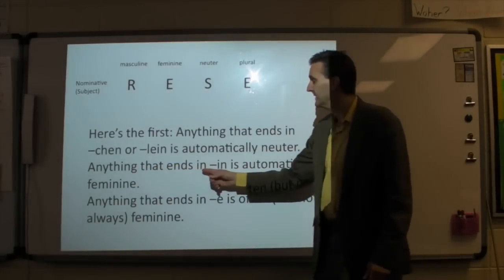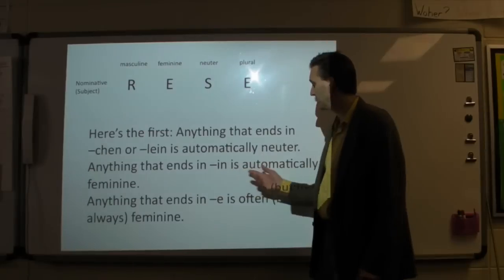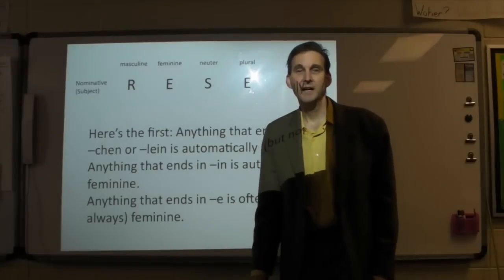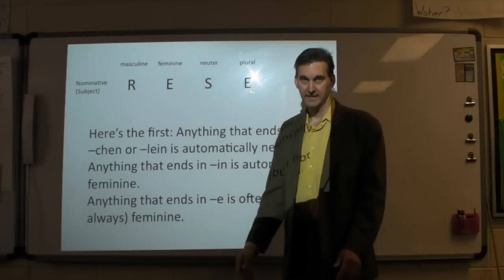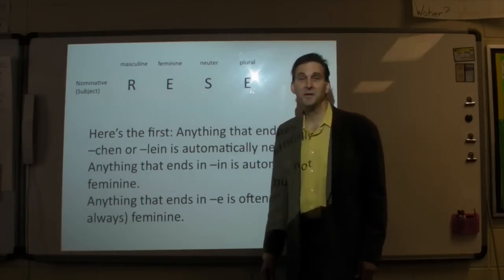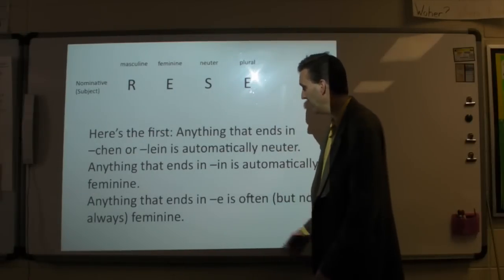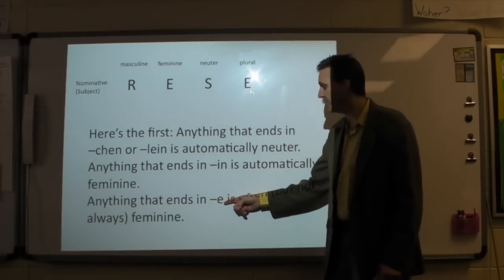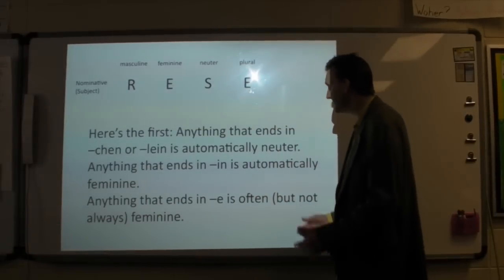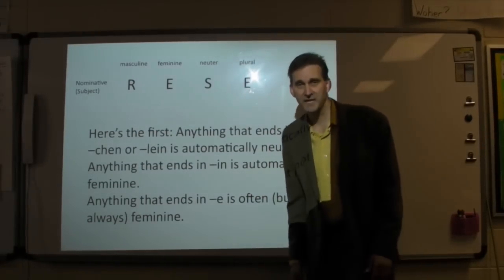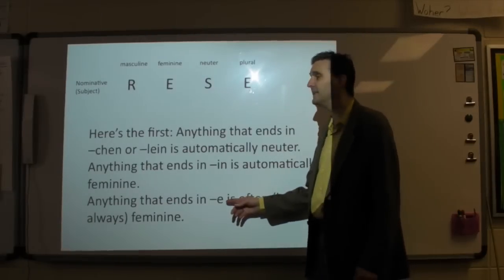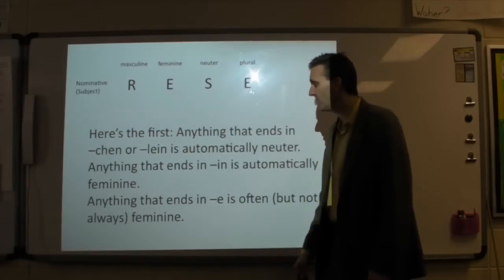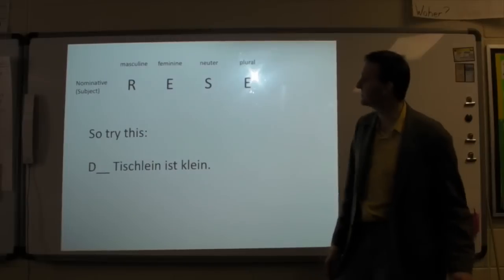Here's another trick: anything that ends in I-N is automatically feminine. Those are usually professions or people like Lehrerin, Schülerin, Freundin, etc. Those are always female persons and always feminine. And one more trick: any noun that ends with an E is usually feminine — nine times out of ten, maybe more than that. So if you see a noun ending with E, like Ecke or Fahne, those are usually feminine.